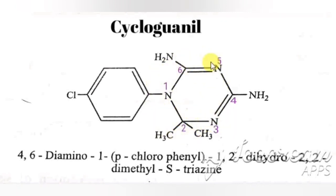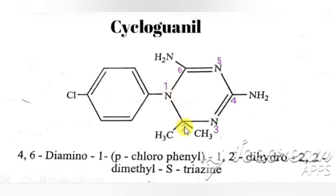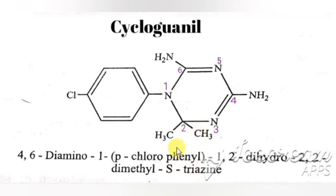For the chemical name of cycloguanil, s-triazine is chosen as the parent. At position 1, a para-chlorophenyl is attached; at position 2, two methyl groups are present; and at positions 4 and 6, two amino groups are attached. One bond remains between positions 1 and 2, requiring two hydrogens — hence 'dihydro.' The full chemical name is 4,6-diamino-1-(para-chlorophenyl)-1,2-dihydro-2,2-dimethyl-s-triazine (or 1,3,5-triazine).